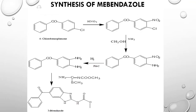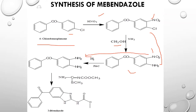For the synthesis of mebendazole: the starting material is 4-chlorobenzophenone. It undergoes nitration in the presence of nitric acid at a specific position. Then ammonia is reacted in the presence of methyl alcohol — the chloro group is substituted and an amine group is introduced as the intermediate. After reduction, the nitro group is converted to an amine. Then thiourea is reacted, which causes the benzimidazole ring to form, yielding the mebendazole drug product.